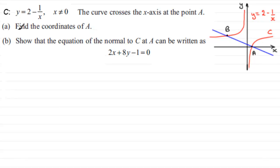And we've got to find the coordinates of that point A. And then we've got to show that the equation of the normal at C at A can be written as 2x plus 8y minus 1 equals 0. That's the equation of this blue line.